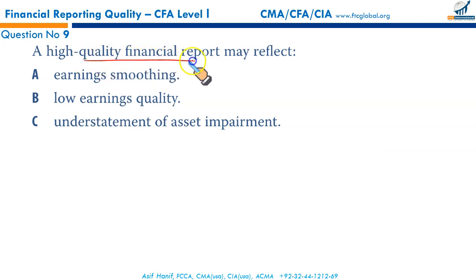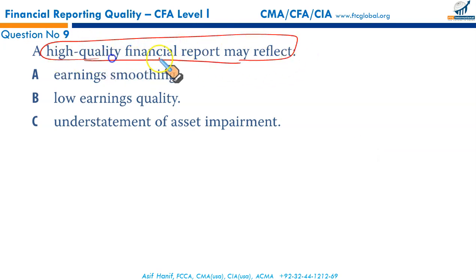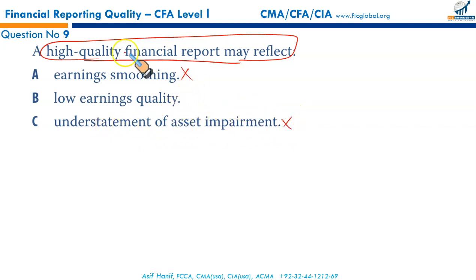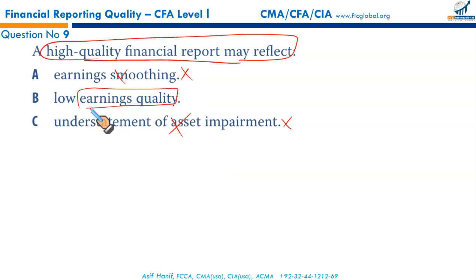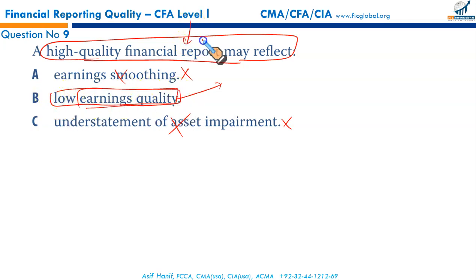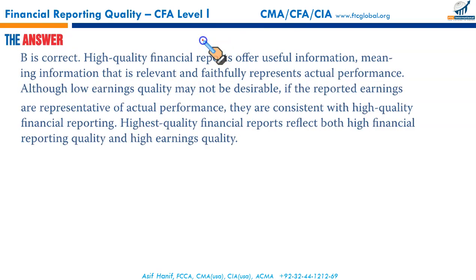A high quality financial report may reflect what? Earnings smoothing is a bad thing — no. Understatement of asset impairment — no, a high quality financial report shouldn't have understated assets. Low earning quality — that is possible. A firm might have had setbacks or low earnings, but the financial reporting must still be reliable, with faithful presentation and usefulness. So low earning quality could be present in financial reports that are high quality. B is the correct option.